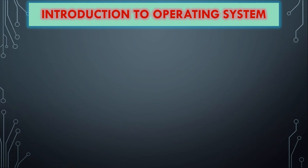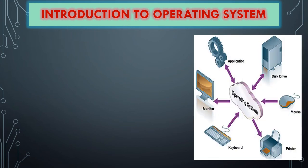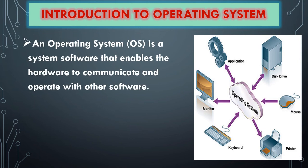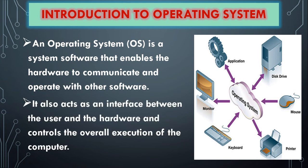Introduction to operating system. In the previous chapter 4, we have discussed about the operating system. It is a system software which enables the hardware to communicate and operate with other software. The operating system controls the overall activity of the computer and each and every part of it to perform tasks based on instructions. It also acts as an interface between the user and hardware, and is responsible for the overall execution of the computer.